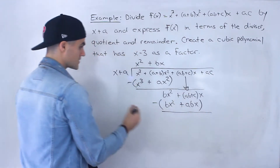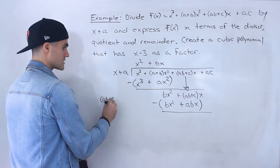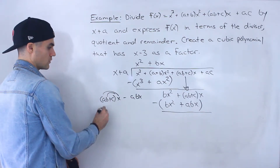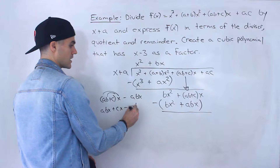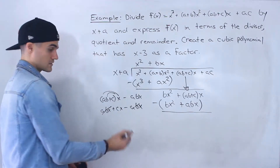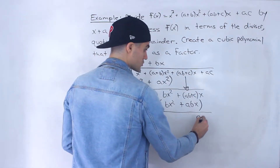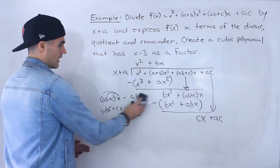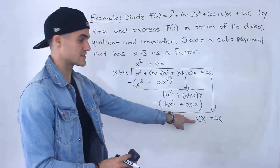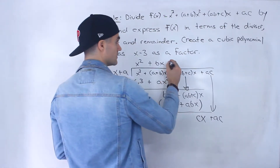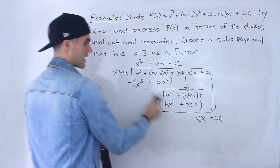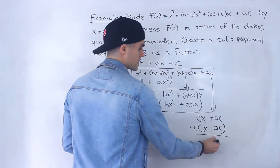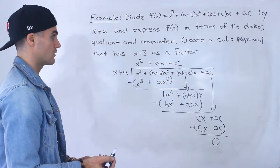Now, on the side here: (ab plus c)x minus abx. If we distribute, we have abx plus cx minus abx — those cancel out. We're just left with cx. We bring this down. How many times does x go into cx? c times. c times x is cx, and c times a is ac. When we subtract, we end up with a remainder of 0.